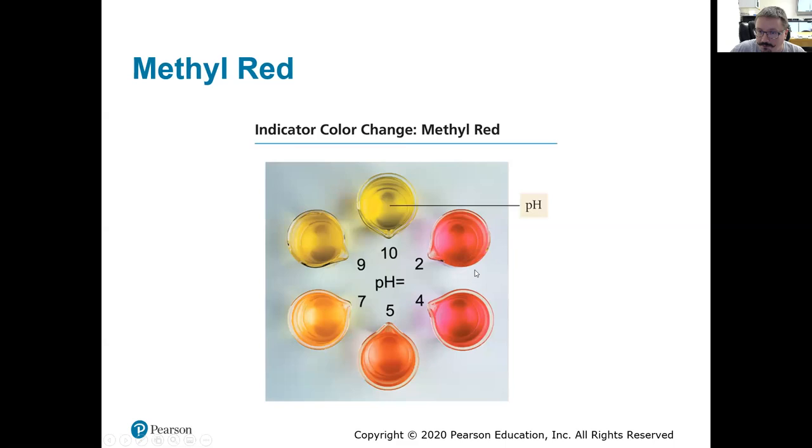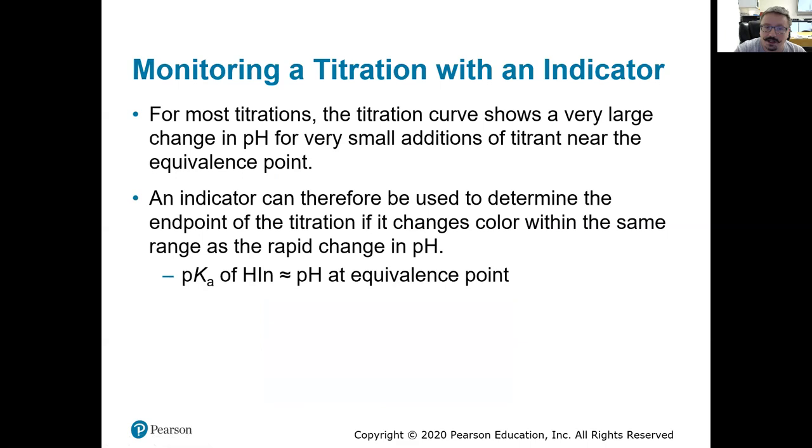So here we have methyl red right here. You can see how it goes from that acidic form to that basic form, we see a noticeable color change. And if on the two extremes, it's red and yellow, what would we see when the ratios are closer together? Mix red and yellow, what do you get? You get orange right there. So if you're not familiar with these, study your color wheels. So you know what happens when we mix red and blue, or blue and green, or red and yellow.